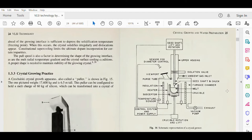The Czochralski crystal growth apparatus, also called a puller, is shown in figure 15. It weighs 17,600 kg and is 6.5 meters tall. This puller can be configured to hold a melt charge of 60 kg of silicon.